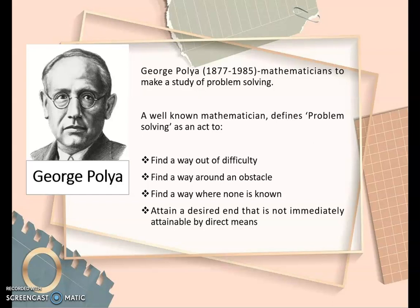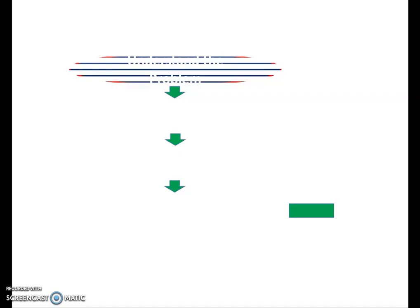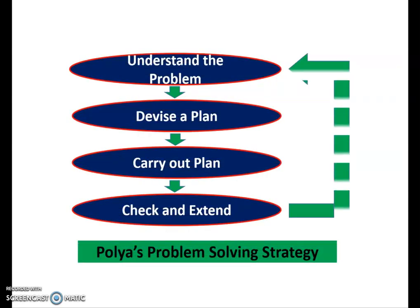Here is George Polya. He is a well-known mathematician who made a study about problem solving. He defines problem solving as an act to find a way out of difficulty, find a way around an obstacle, find a way where none is known, and attain a desired end that is not immediately attained by direct means. Here are his four approaches to problem solving: Step 1, understand the problem; Step 2, devise a plan; Step 3, carry out the plan; Step 4, check and extend your answer.